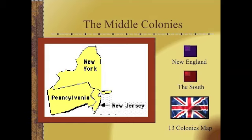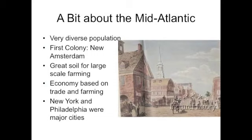The second colonial region is the Middle Colonies, sometimes known as the Mid-Atlantic Colonies, consisting of New York, Pennsylvania, and New Jersey. These were some of the wealthiest and most diverse colonies in the Americas. The Mid-Atlantic Colonies drew people from England, the Netherlands, and Germany. The first colony in this region was New Amsterdam, which would eventually become New York. The great soil and large-scale farms made the economy very profitable, and New York and Philadelphia grew into large port cities.